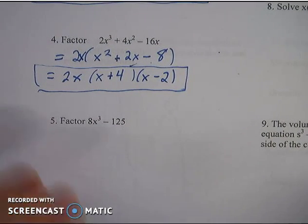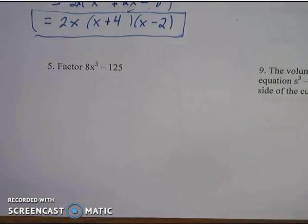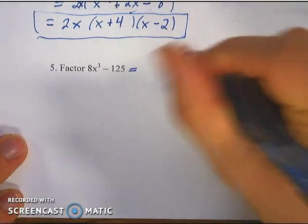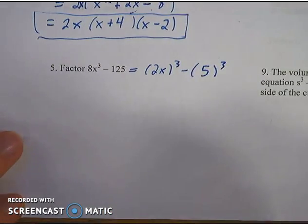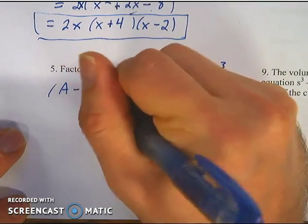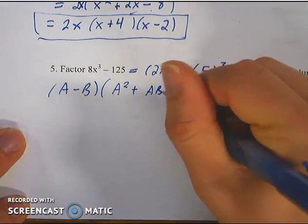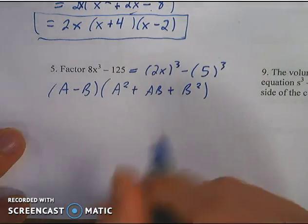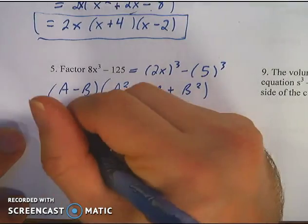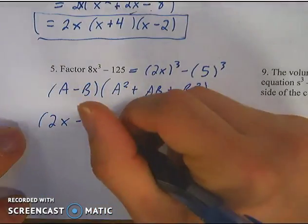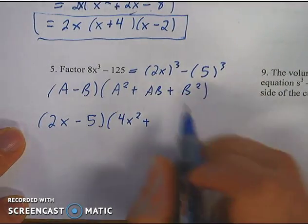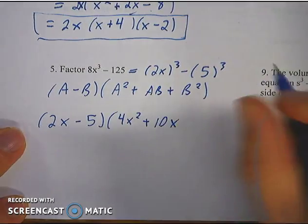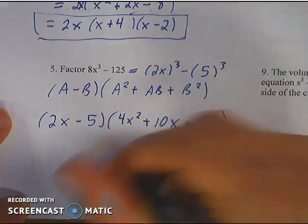Looks to be the last factoring question, number 5. Factor 8x cubed minus 125. You're supposed to recognize this as the difference of cubes because you can rewrite it as 2x cubed minus 5 cubed, since 2 cubed is 8 and 5 cubed is 125. Using the same formula — a minus b times a squared plus ab plus b squared — with a equals 2x and b equals 5, you get 2x minus 5 times 4x squared plus 10x plus 25. And that's the fully factored form.